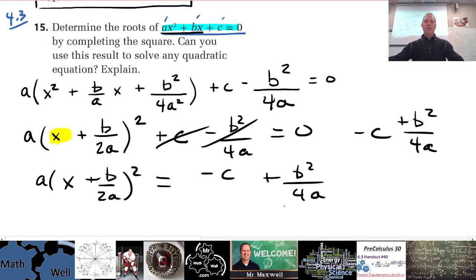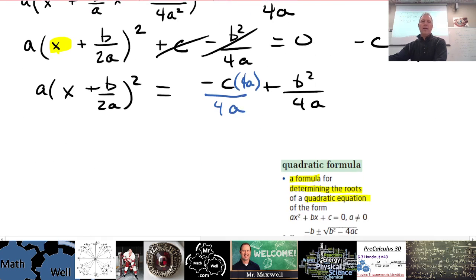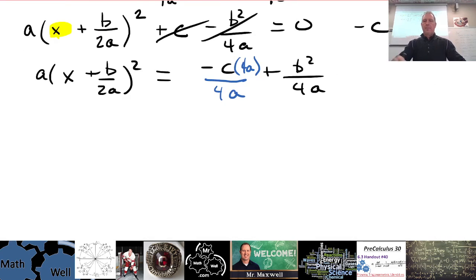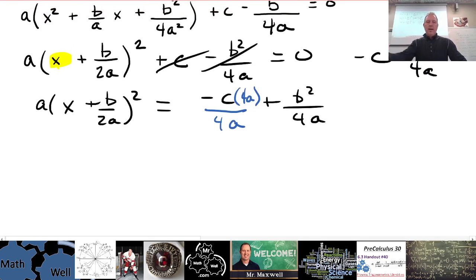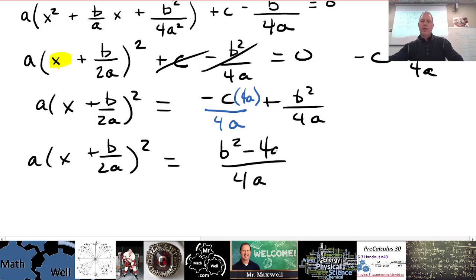I could divide both sides by a now, but what I'm going to do is I'm going to get a common denominator over here and combine these into one term. So I'm going to make this over 4a as well, which means that I need to multiply by 4a on the top there too. So I have a times x plus b over 2a all squared equals, now this is all going to be over 4a, and I'm going to have negative 4ac plus b squared. I'm going to write that as b squared minus 4ac.